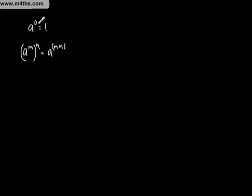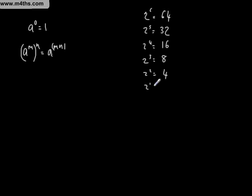Let's just look at this. Anything to the zero power is just 1. Let's start with 2 to the power of 6, which is 64. 2 to the power of 5 is 32. 2 to the power of 4 is 16. 2 to the power of 3 is 8. 2 squared gives us 4. 2 to the first power gives us 2. We're dropping by power each time on the left, so the next one is 2 to the zero.